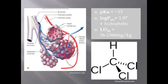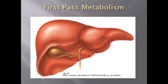Chloroform is a simple haloalkane in which three chlorine atoms have been substituted for three hydrogen atoms on the methyl group. Chloroform has a pKa value of approximately 13 and a log Pow value of 1.9, which means that it is a hydrophobic molecule within the range of drug likeness and can easily cross the alveolar membranes.